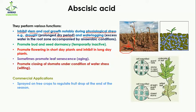Another example is water logging — a situation where excess water is present in the root zone. Because of this large quantity of water, oxygen cannot enter the soil, and anaerobic conditions develop. Under water logging, abscisic acid also inhibits stem and root growth.